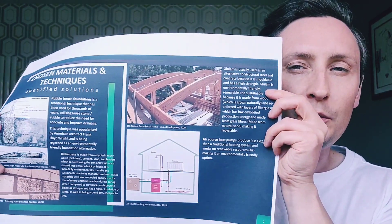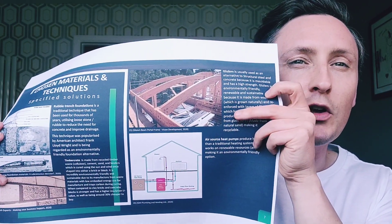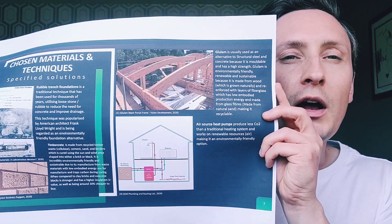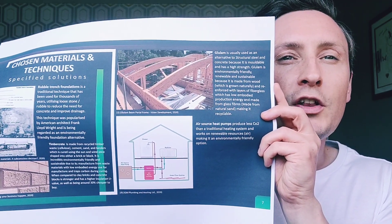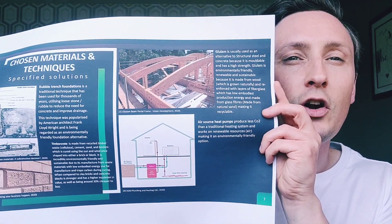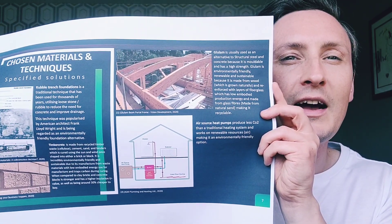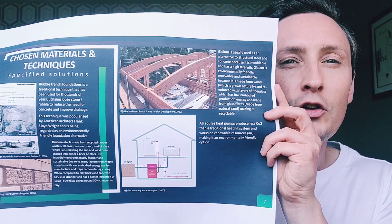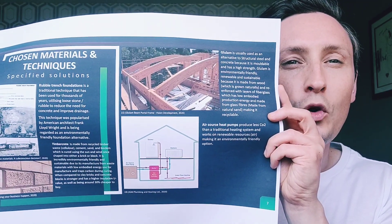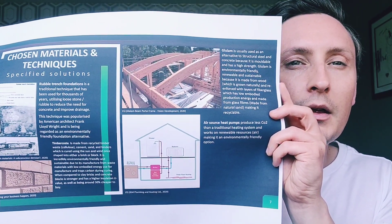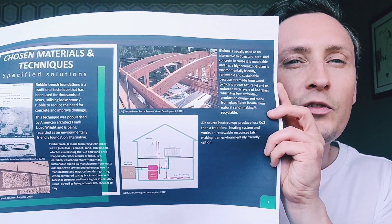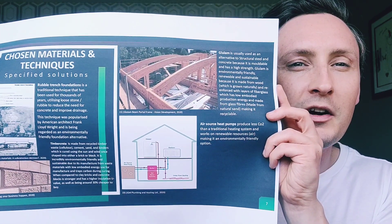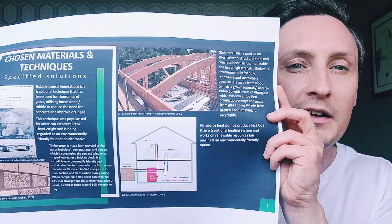Another component I intend to use would be glulam beams and a frame. It is usually used as an alternative to structural steel and concrete because it is mouldable and has high strength. Glulam is extremely environmentally friendly, renewable and sustainable because it is made from wood, which grows naturally, and reinforced with layers of fibreglass, which has low embodied production energy and is made from glass fibres derived from natural sand, making it recyclable.